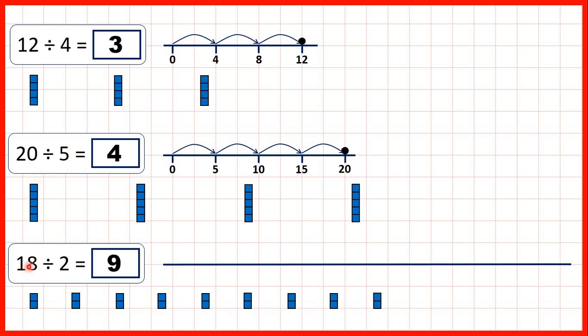And then we had 18 divided by 2. And what we can do is count in steps of 2 until we get to 18. We can count 2, 4, 6, 8, 10, 12, 14, 16, 18. So all together we've made 9 jumps. So our answer is 9. 18 divided by 2 is 9 because 9 times 2, 9 groups of 2, make 18.